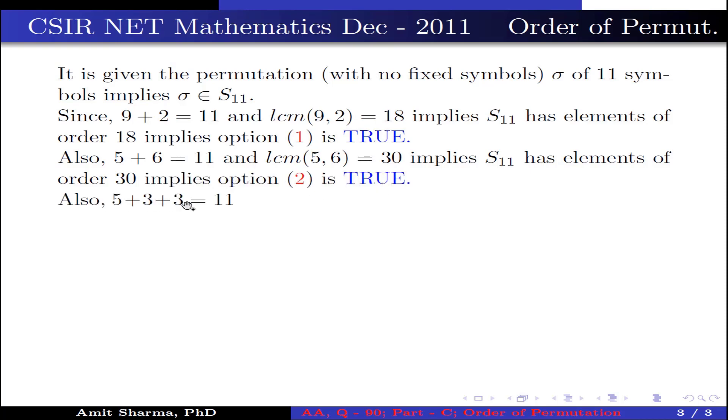Also, 5 plus 3 plus 3 is 11 and LCM of 5, 3, 3 is 15. This implies S11 has elements of order 15, or the permutation sigma can have order 15. This implies option three is also true.